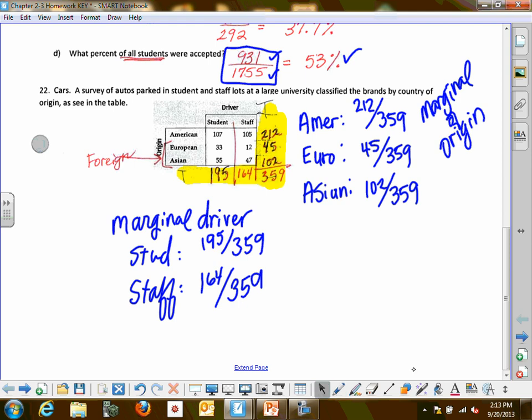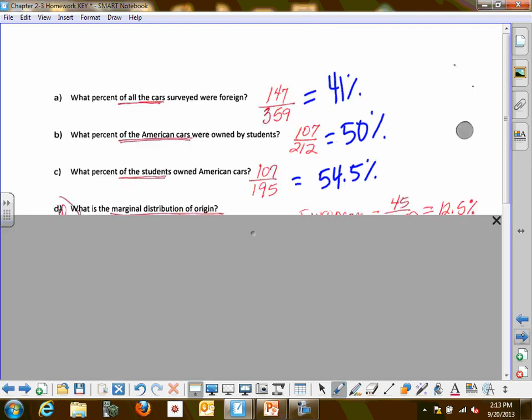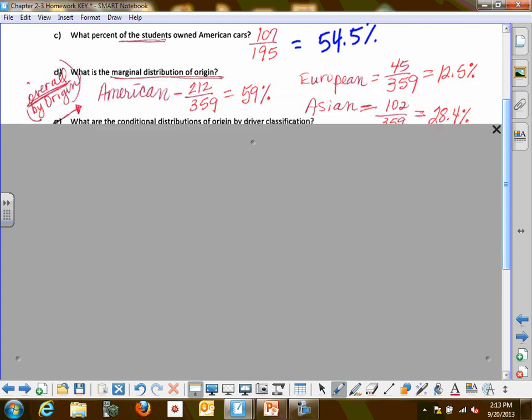The next question comes from conditional. Conditional means it is conditional upon two variables. This middle section is where your values are affected by two variables. For example, 107 uses or is a number that represents the students that are driving American cars. Student drivers driving American-made cars, 107. So this section green is the conditional because they're affected by two variables.